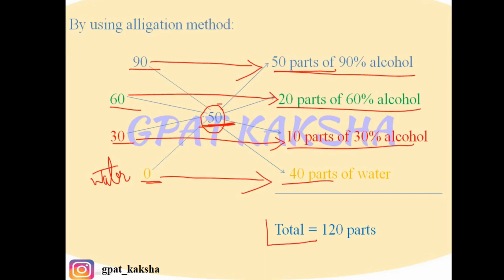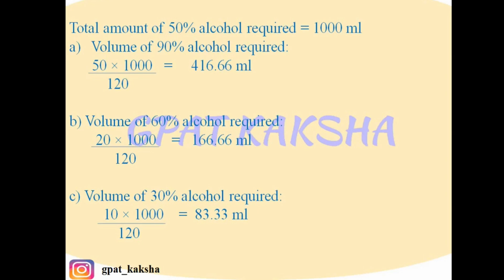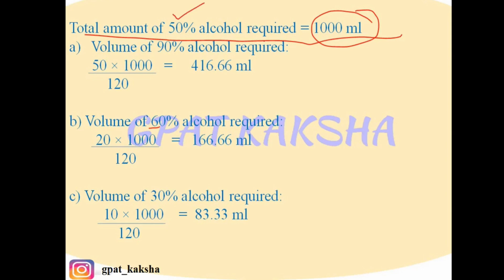The total parts of all mixture components — 90%, 60%, 30% alcohol, and water — is 40 + 10 + 20 + 50 = 120 parts. Since the total amount of 50% alcohol required is 1000 ml, we calculate individual volumes. The volume of 90% alcohol required: 50 parts out of 120, so (50/120) × 1000 = 416.66 ml.